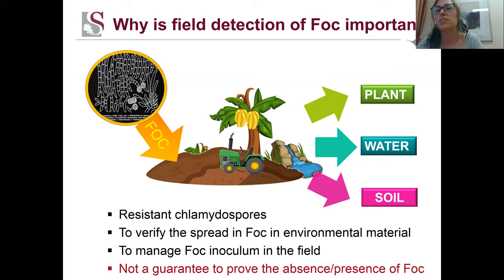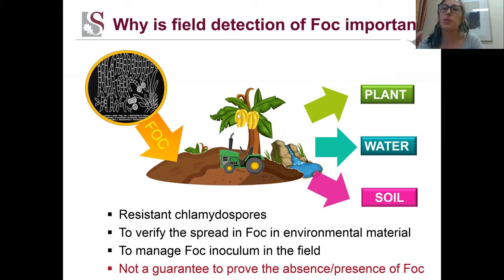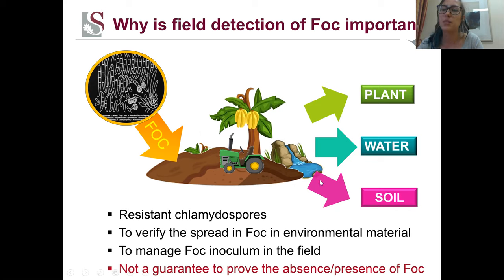In this picture, you will see there's a variety of images. There's some soil, plant material, a tractor, and water. And these are all ways in which this pathogen can be spread and reach a susceptible banana plant and cause infection. So our detection will focus on when you want to find the fungus within one of these environmental sample types.